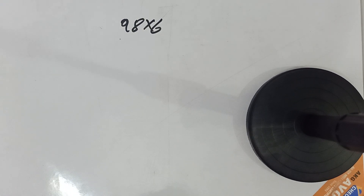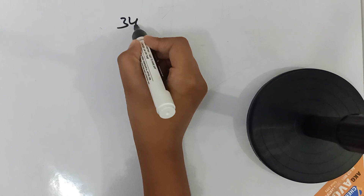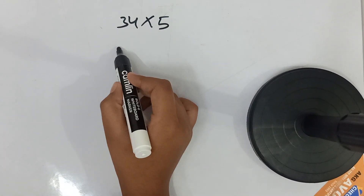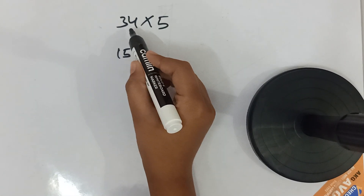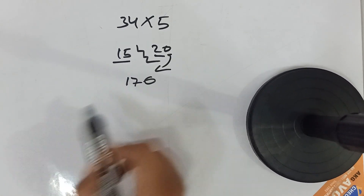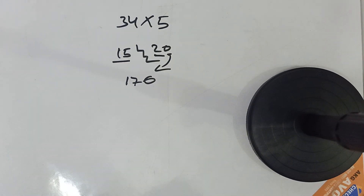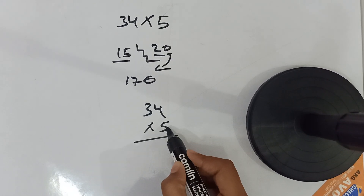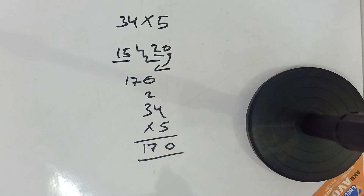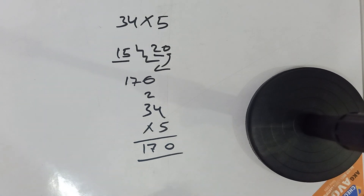Let's solve one more question before moving to three-digit numbers. Let's take 34 multiplied by 5. This one is very easy: 5 into 3 is 15, step, then 5 into 4 is 20. Now 15 plus 2 gives 17, and we put a 0 here — so 170. See how quickly you can answer this, even mentally.